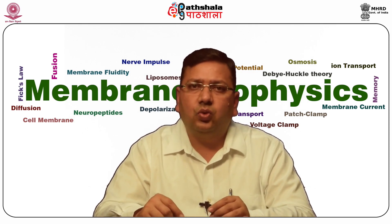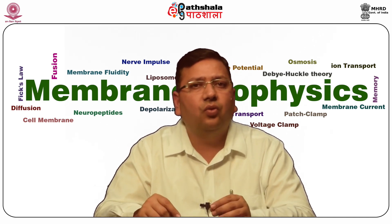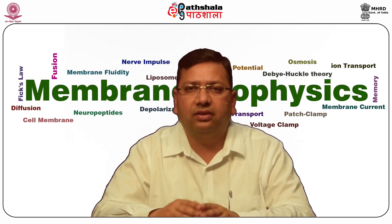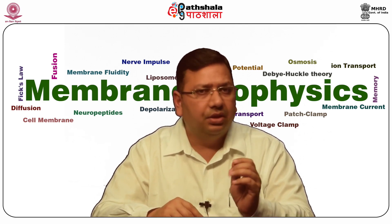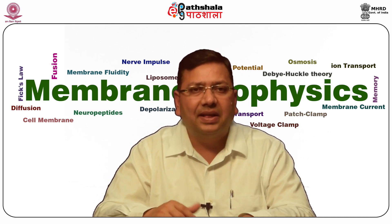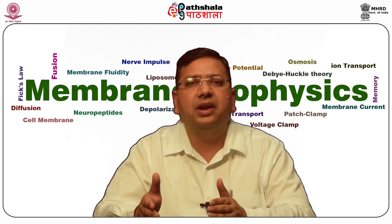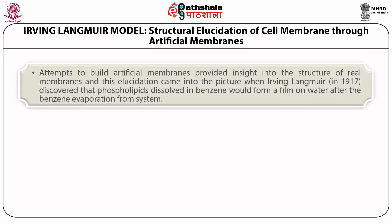Initial predictions of lipid content as a major ingredient were justifiable. However, this model of cell membrane had several demerits. For example, there was no explanation for the movement of water and other hydrophilic substances across cell boundaries, and no idea related to an energy-dependent selective transport system. Attempts to build artificial membranes provided insight into the structure of real membranes, and this elucidation came when Irving Langmuir in 1917 discovered that phospholipids dissolved in benzene would form a film on water after benzene evaporation from the system.